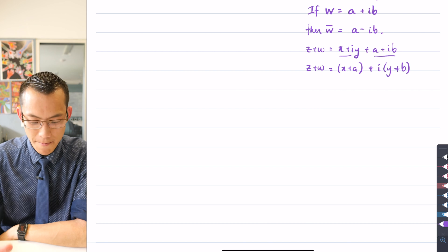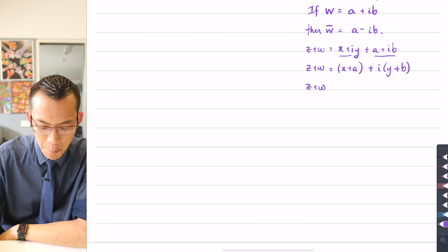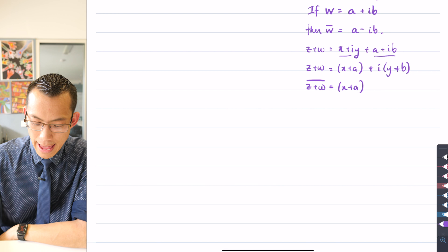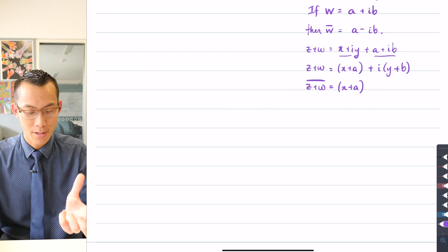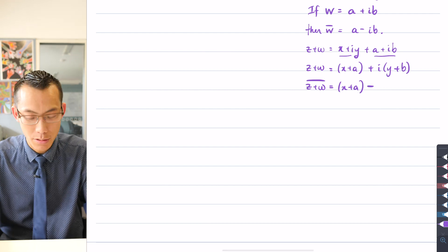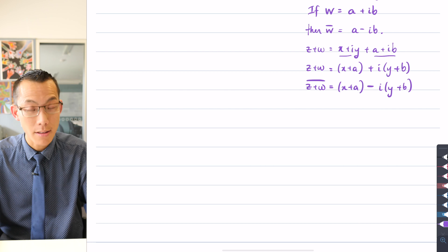So there's z + w; I haven't taken the conjugate yet. Now if I take the conjugate of the left-hand side, then by definition the real part remains unchanged, like so, and the imaginary part I flip the sign around. Well, currently it's a plus, I'm going to change it into a minus. So I get i(y + b), and like so.